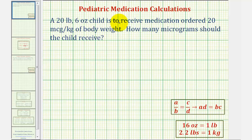Welcome to an example of a pediatric medication calculation that will be determined using proportions. A proportion is made when we set two ratios, or rates, equal to each other, as we see here.